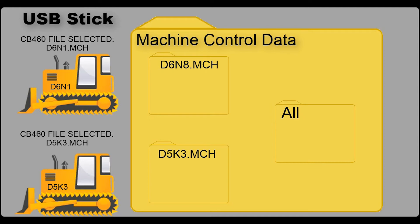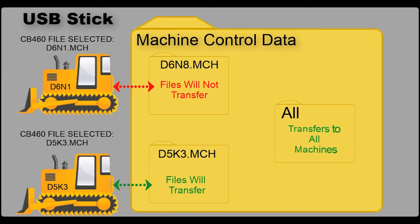The problem with using machine-specific folders is that if you do not have the correct machine file selected on the control box when you go to transfer the files, it will not transfer. So just as a rule of thumb, always place your design files in the ALL folder. That way, when you stick the USB in, it will transfer to any machine without any problems. That's our recommendation.